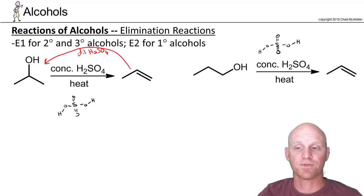if you use dilute H₂SO₄, it shifts towards the alcohol. If you use concentrated H₂SO₄, it shifts towards the alkene. We're going to use concentrated H₂SO₄, exactly the opposite reaction we learned with alkene.